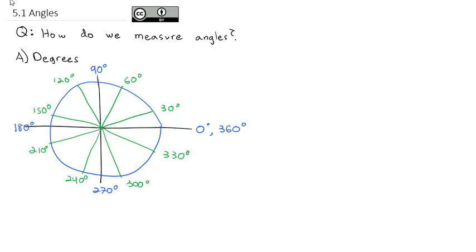Each 90-degree quarter could also be split in halves. Half of 90 is 45 degrees. So counting every 45 degrees, we've got 45, 90, 135, 180, 225, 270, 315, and 360. These are the common angles we're going to work with a lot in this course. You should be very familiar with where they're located on the circle.